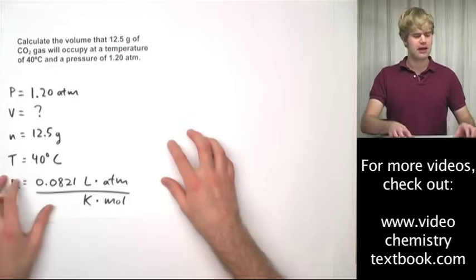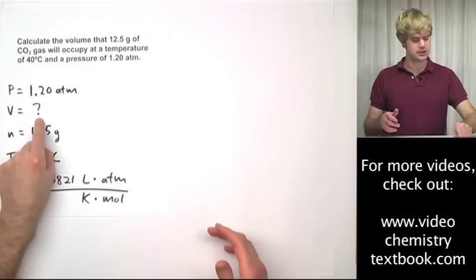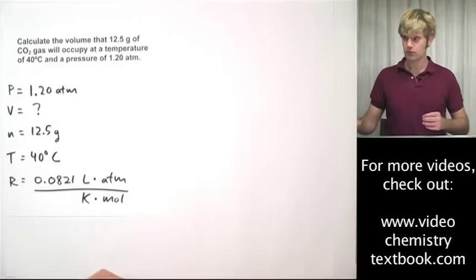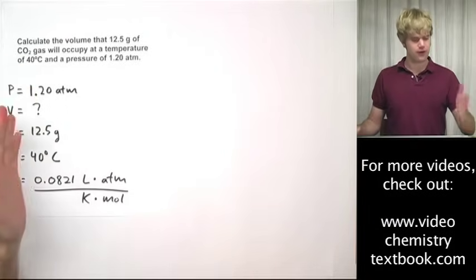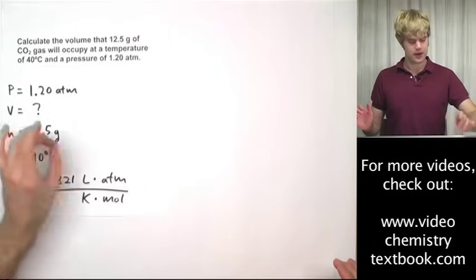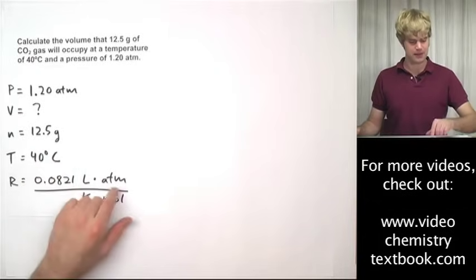I've gone ahead and filled in a number of the variables that we're going to be using. As you can see here, volume is what we're going to be solving for. When we do this, the first thing that I always check is to make sure that the units of the variables match the units on R. Okay, so we have atm, atm, that's great.